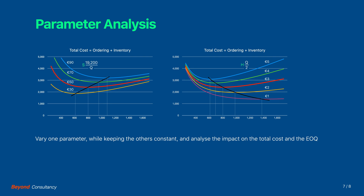Before concluding this keynote we will do a parameter analysis. In this analysis we will vary one parameter at a time while we analyze the impact on the total cost and the optimal order size. In the charts the red curves depict the total cost function from the example, namely where the ordering cost S equals 50 euro, the inventory cost H equals 3 euro, and the annual demand D equals 19,200 units. The economic order quantity sits at 800 units.